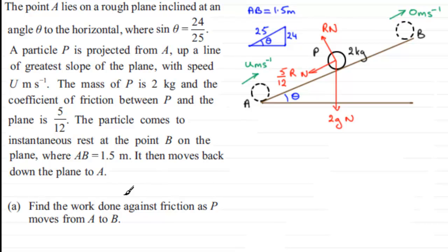So to get the work done against friction, it's going to be this force multiplied by the distance AB, 1.5 metres. The problem is, we need to get R first of all.